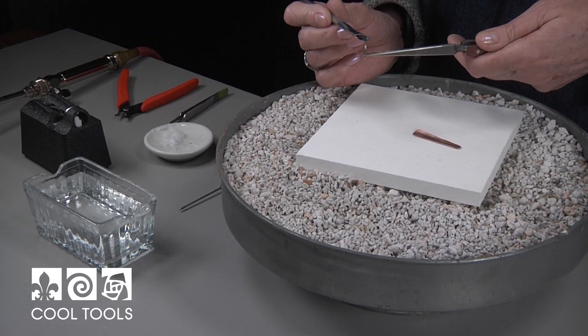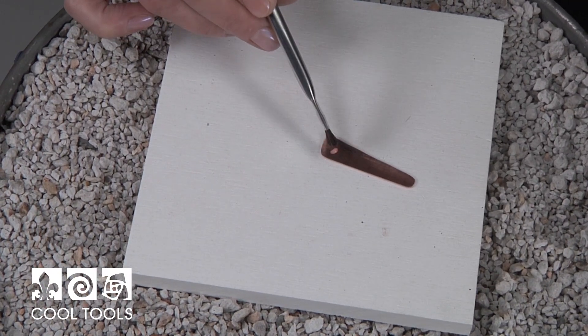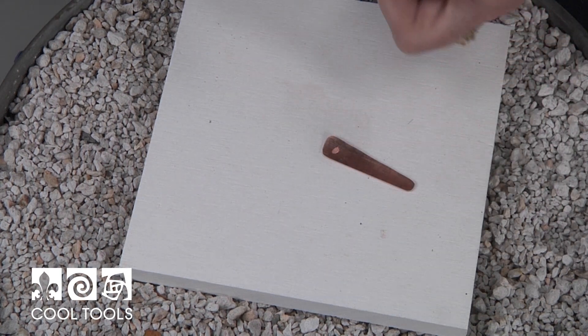So we're going to need flux on the end of our post that we're soldering on and we're also going to need a little flux on the back of the earring where the post is going to go.